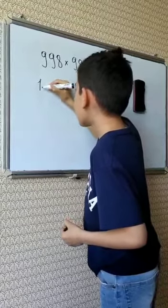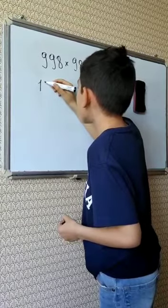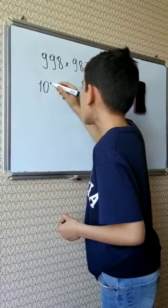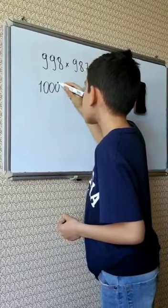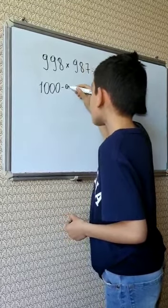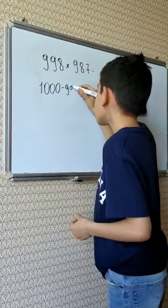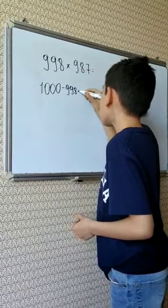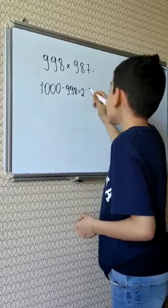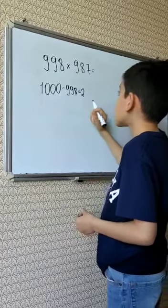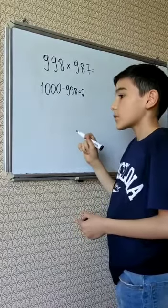First we need to subtract 998 from 1000. That's 2. And we need to subtract 987 from 1000.